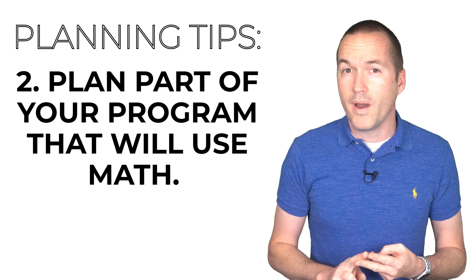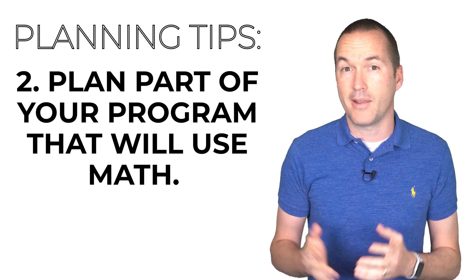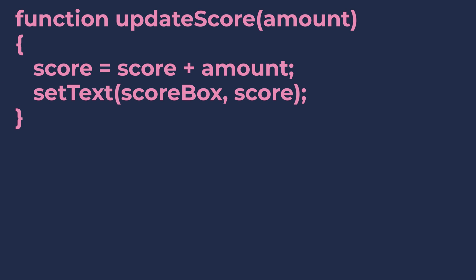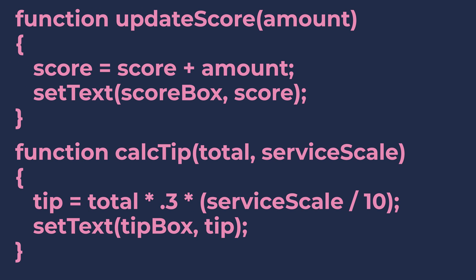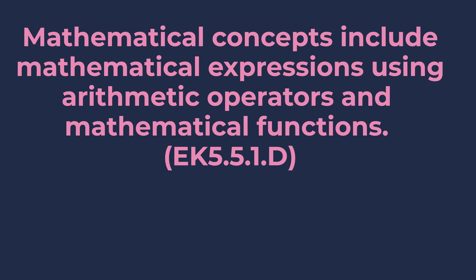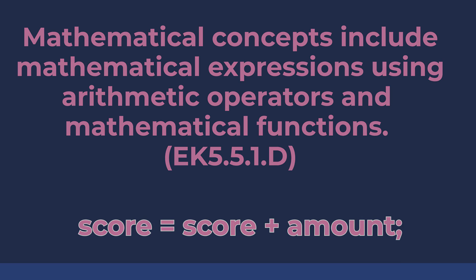Tip 2: At least one aspect of your program should involve math to satisfy row 5 on the rubric. This could be as simple as keeping track of a score by adding different point values to a total, or more complex like converting units or calculating a tip based on quality of service. CollegeBoard defines math as an expression that uses arithmetic operators, so something as simple as score equals score plus amount would qualify.